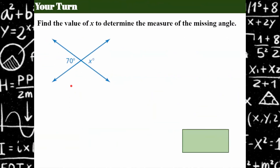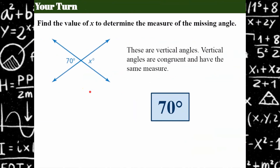Your turn — go ahead and pause, come back when you're done. Welcome back. These are vertical angles, and vertical angles are equal or congruent. So the missing angle has to also be 70 degrees.